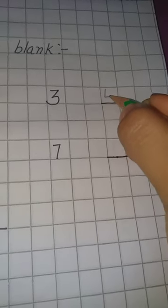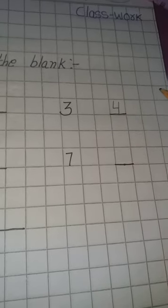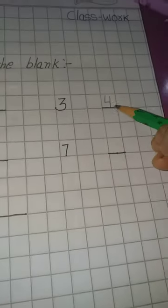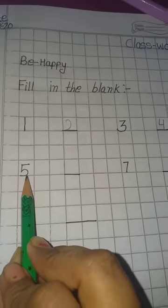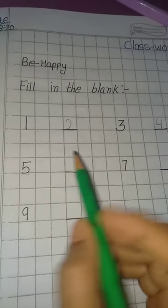Standing line, sleeping line, one more standing line. 4. 4 ke baad kya aata hai? 5. This is 5. 5 ke baad kya aata hai? 6.